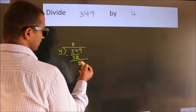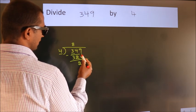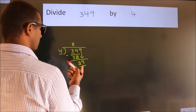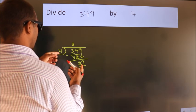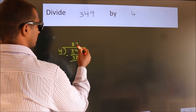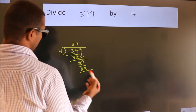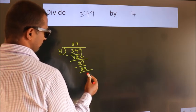After this, bring down the next number, 9, so we have 29. A number close to 29 in the 4 table is 4 times 7 equals 28. Now we subtract and get 1.